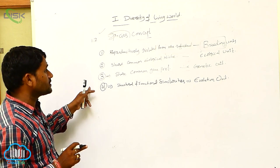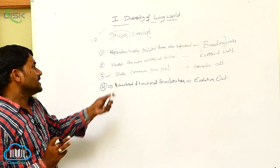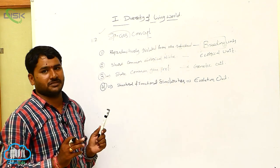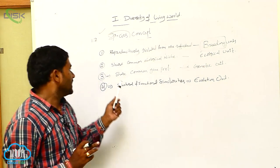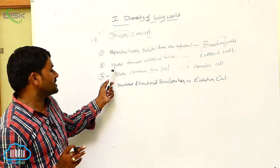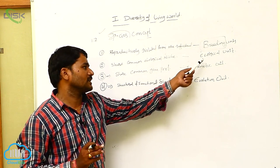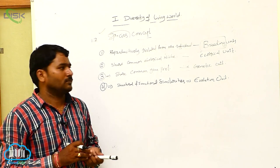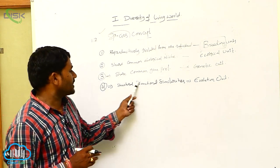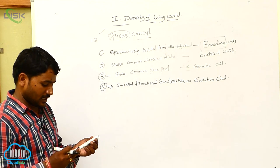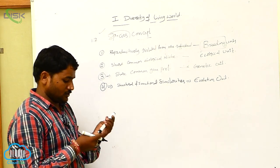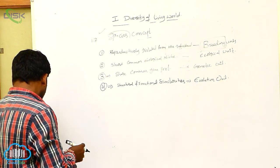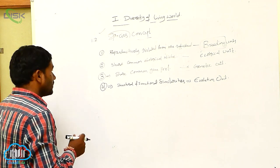So species follows these four fundamental characters: individuals of a species are reproductively isolated from other species — that is the breeding unit; they share a common ecological niche — ecological unit; they share a common gene pool — genetic unit; and they have structural and functional similarities — that is called the evolution unit. These are the four fundamental properties of species.